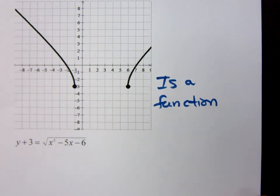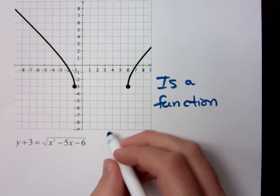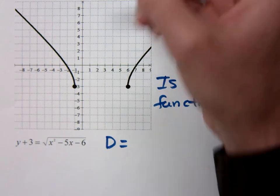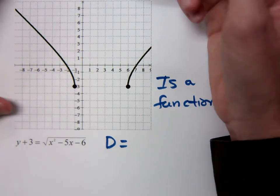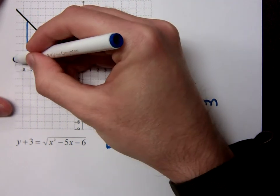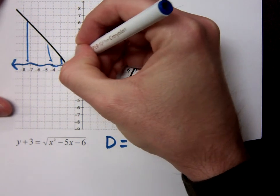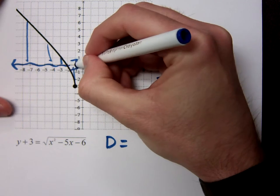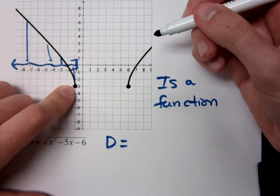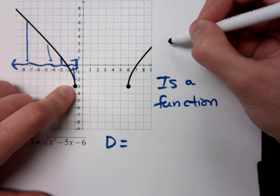What can you tell me about its domain? Negative infinity to negative one. If you were to compress all this onto the x-axis, move all this down here to the x-axis, you're coming from negative infinity to negative one. Notice I've got a closed circle here, so that means I'm including it. But notice there's this other piece right here.